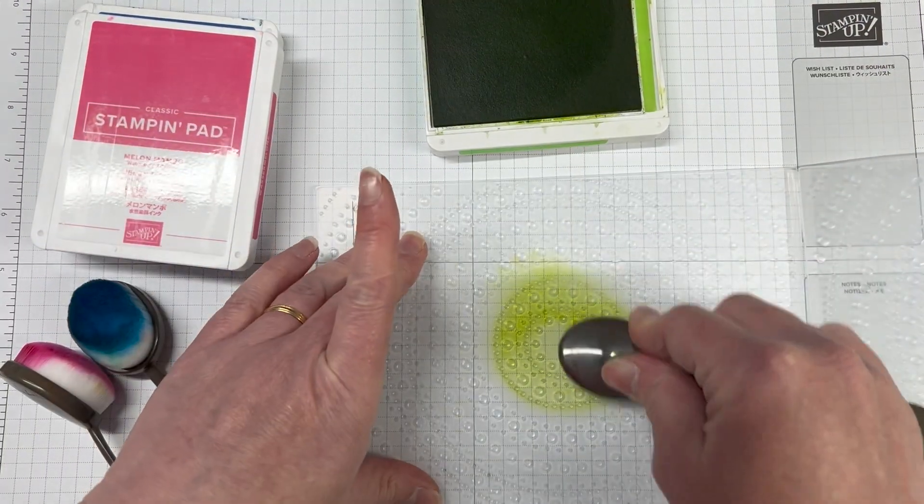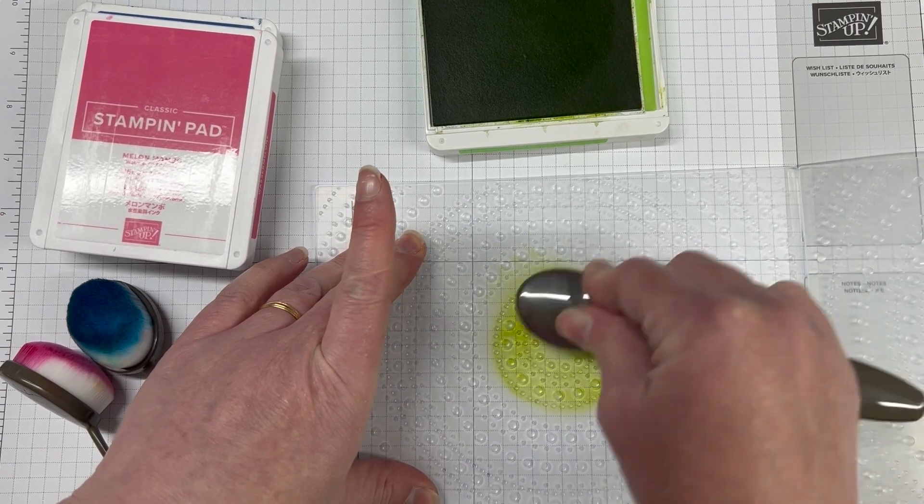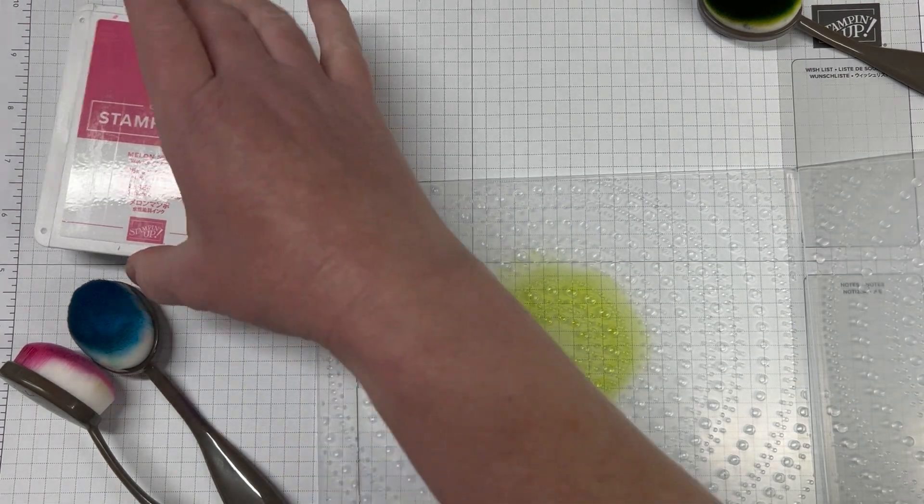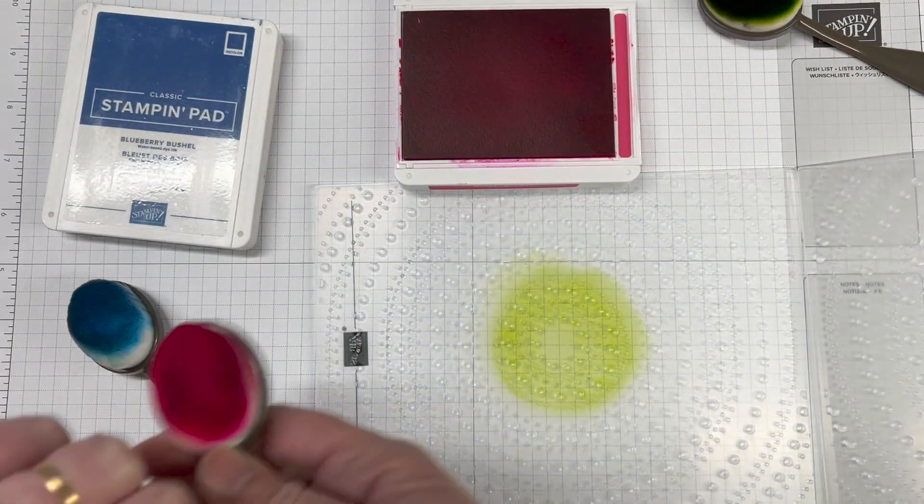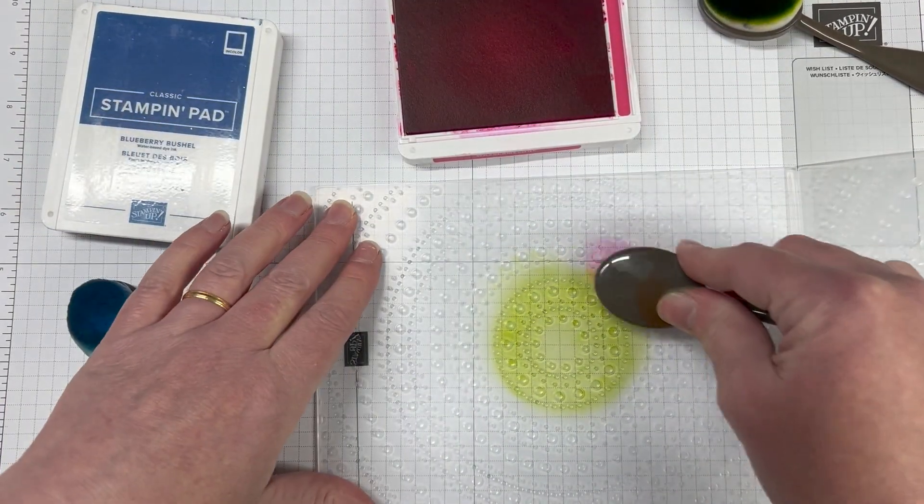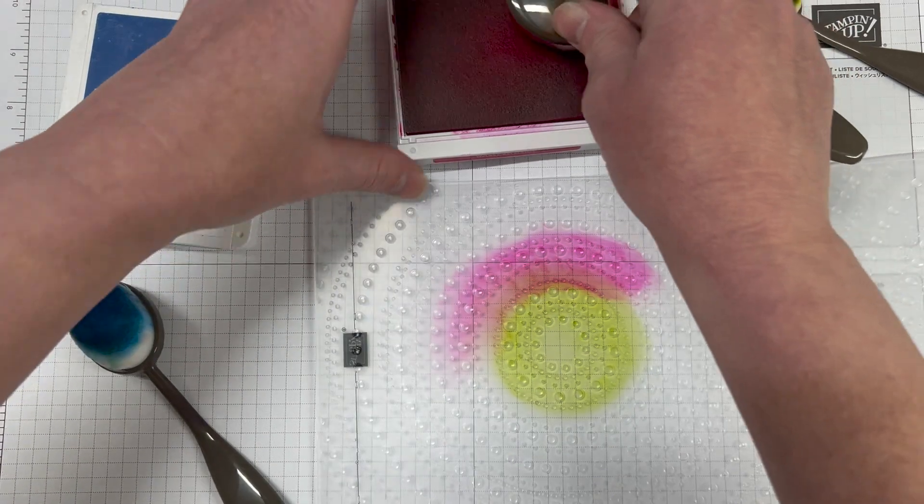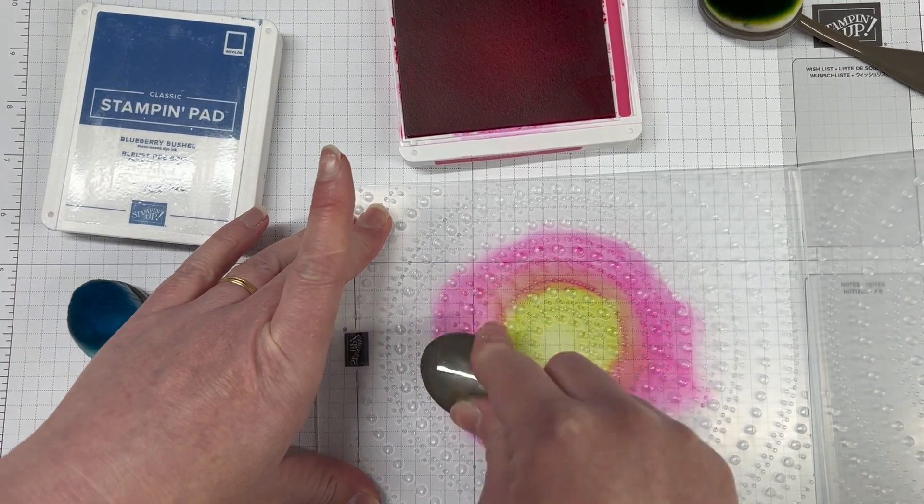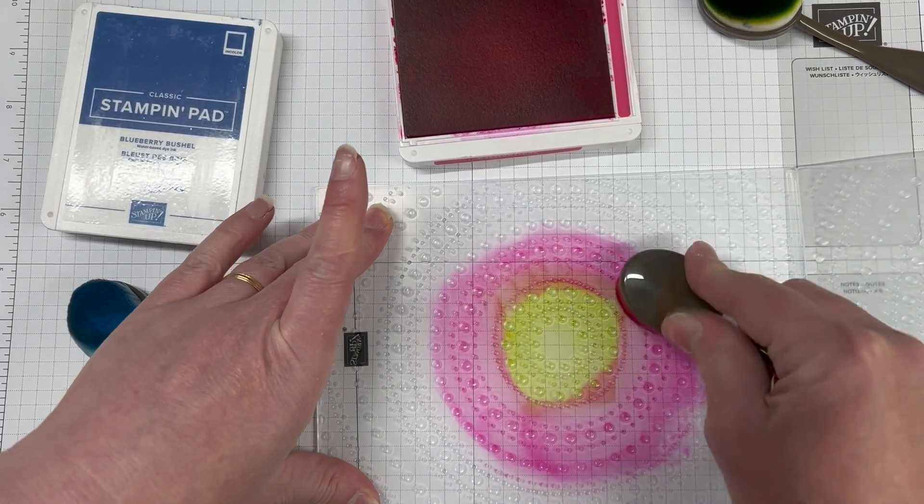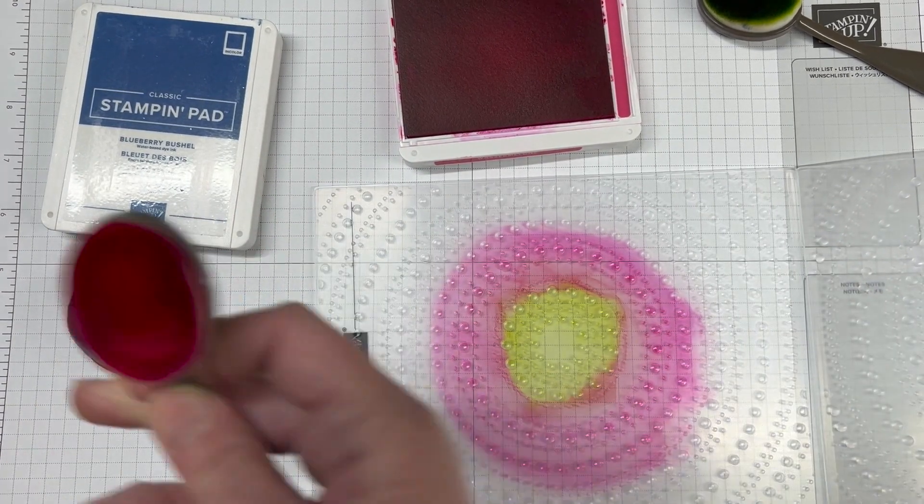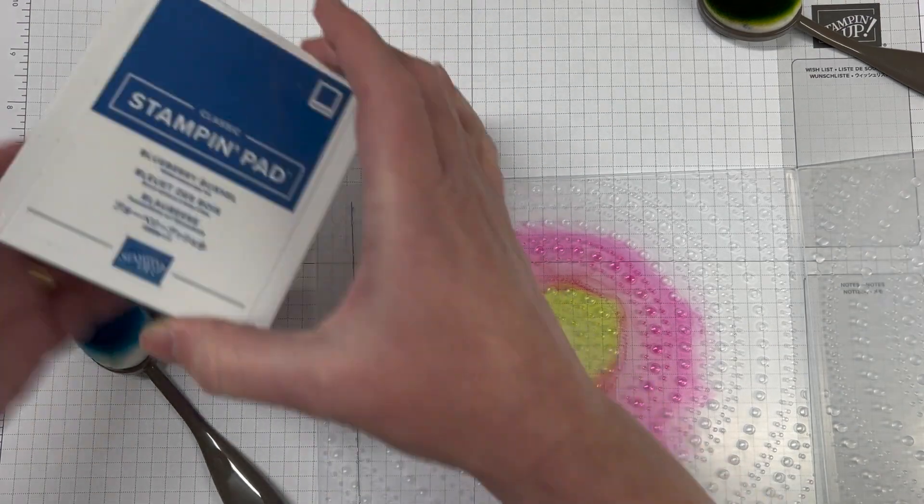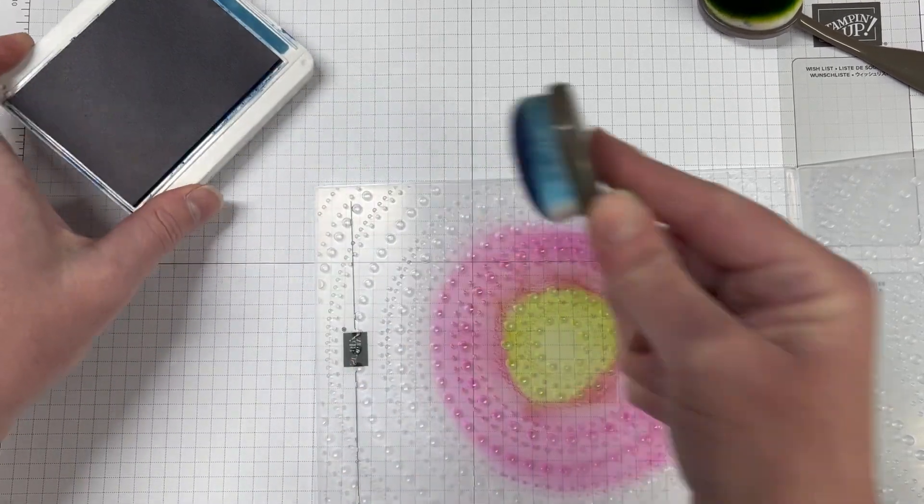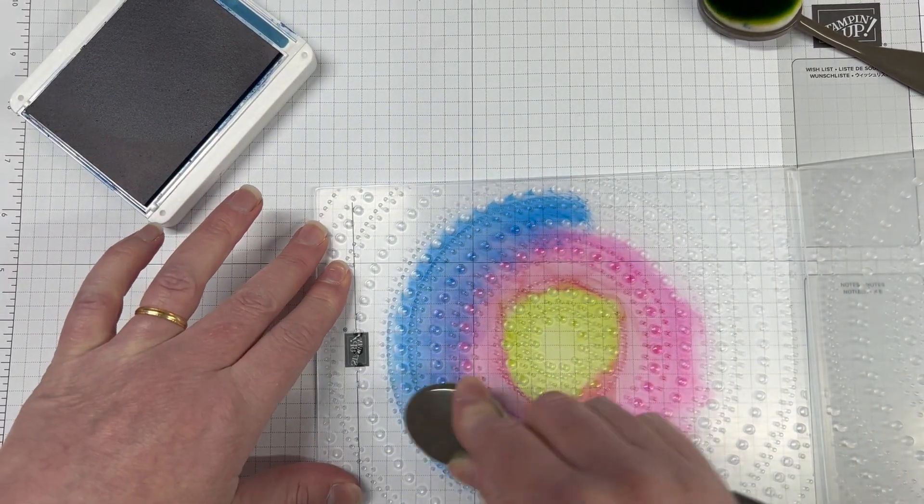So what I'm doing here is I'm inking up the embossing folder on the front side, the Stampin' Up logo side. I did this for card class in Bendigo last month and it worked out that to do this technique, you had to do it on the Stampin' Up logo side. Obviously it didn't work this time, but I'm happy I'm going to get to show you both ways of using this technique.